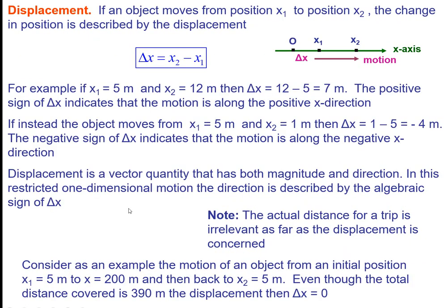Displacement is change in position. Displacement may be positive, zero, or negative. For example, if initial position is 5 m and final position is 12 m, then change in position is 12 minus 5, which equals 7 m (positive displacement).